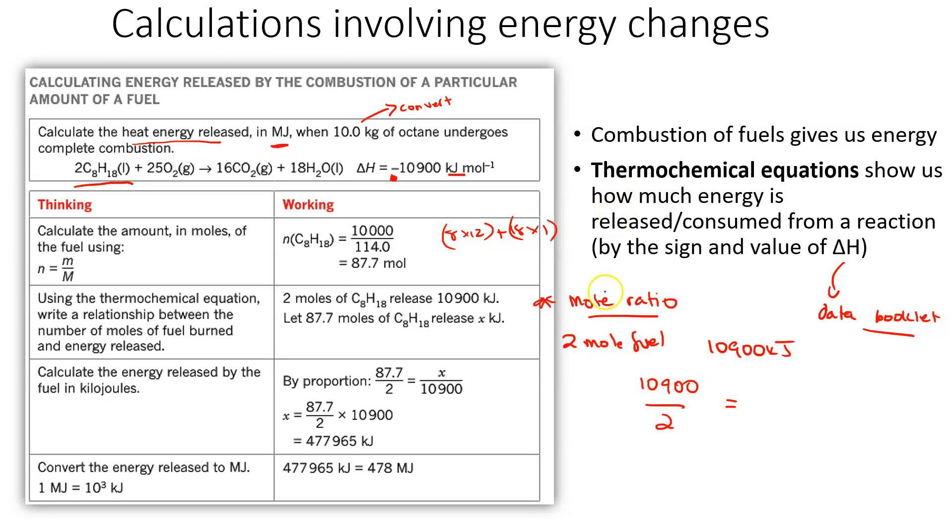So this means that I'm going to have 10,900 divided by 2 is going to be the energy per mole. We can do this by proportion, we can set up the 87.7 moles divided by 2 is going to equal X on 10,900. If you're not comfortable doing this setup, I often do it this way. I just tend to work out how much I'm going to have for one mole. So 10,900 divided by 2, this 2 coming from the coefficient of the fuel, which is 2 up here in our balanced chemical equation, which means I'm going to get 5,450 kilojoules per mole.